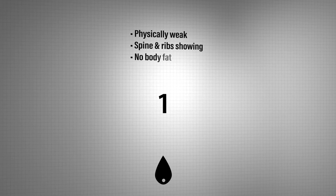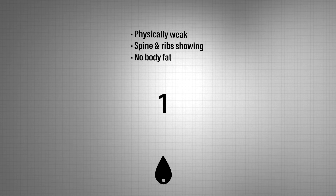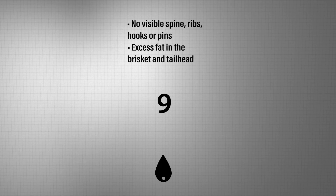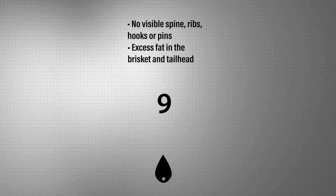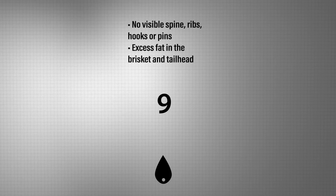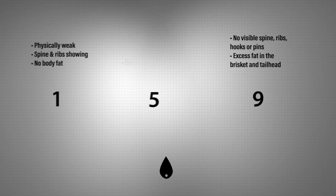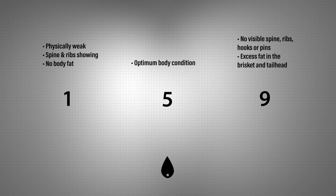Body condition scores for beef cattle are evaluated on a 1 to 9 scale. A body condition score of 1 represents an emaciated, physically weak animal with the spine and ribs showing and no body fat. On the other end of the scale, a score of 9 represents an animal that is over-conditioned, with no visible spine, ribs, hooks, or pins, and excessive fat in the brisket and tailhead region. Optimum body condition is in the middle of the scale, with a score of 5.